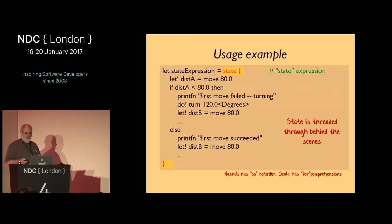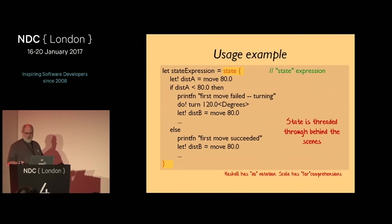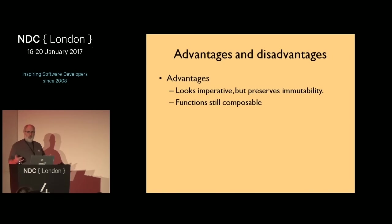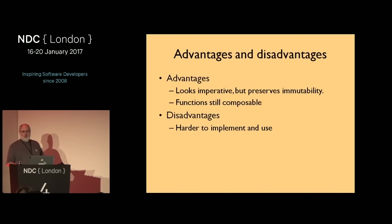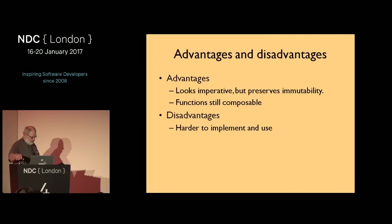This is very common across functional languages: Haskell has do-notation, Scala has for-comprehensions — all related to monads. F# computation expressions are similarly related. Advantages: it looks like imperative code but it's actually immutable state management behind the scenes; functions remain composable. Downside: much harder to implement and tricky to use in practice. I have a talk called 'The Monadster' which covers the state monad in depth.